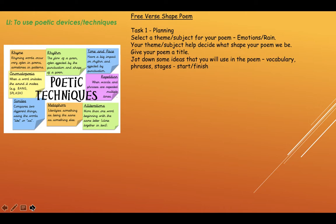Jot down some ideas that you will use in the poem — think of vocabulary. Once you've decided on your subject or theme, think of some words and phrases that you can use. Think in stages: what are you going to have at the beginning of your poem and how will your poem finish? If you're doing animals, think about animal characteristics — what is the animal doing, where is the animal, what's the weather like, are there other characters in your poem? Also think about how you will use punctuation — it controls the rhythm and pace.